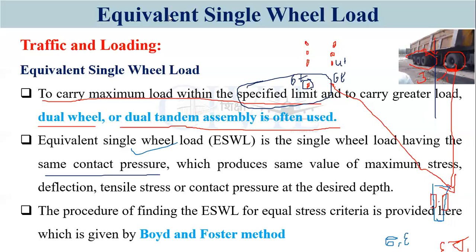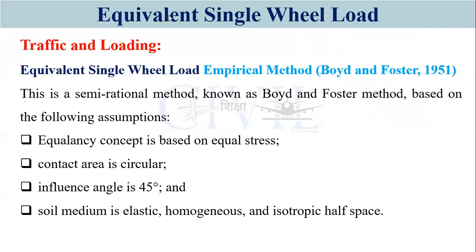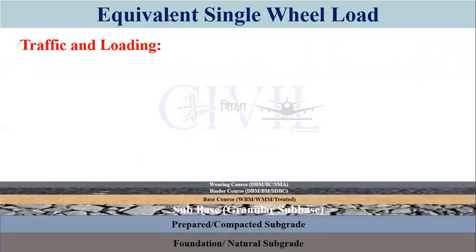To find ESWL, we use the procedure for equal stress criteria provided by Boyd and Foster. This is a semi-rational method based on the following assumptions: the equivalency concept is based on equal stress; the contact area between the tire and the road surface is assumed circular (though actually elliptical) for ease of analysis; the influence angle is 45 degrees at which the load disperses; and the soil medium is elastic, homogeneous, isotropic half-space.